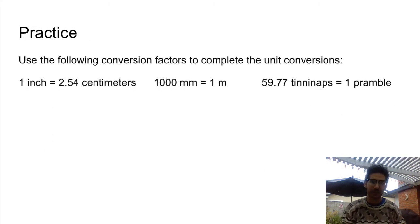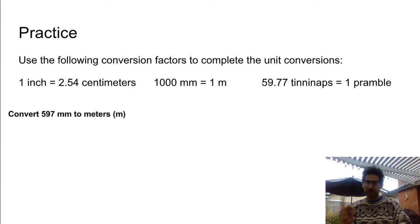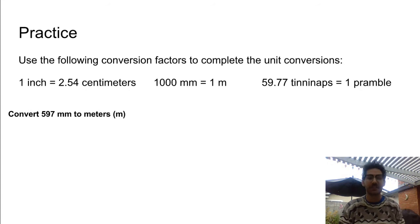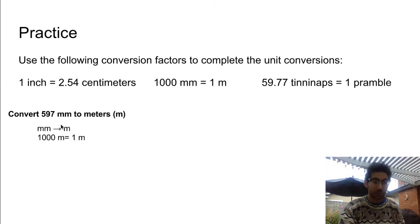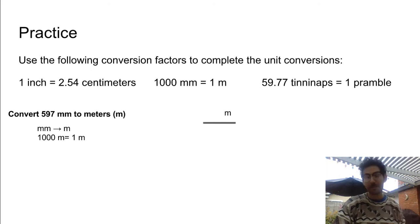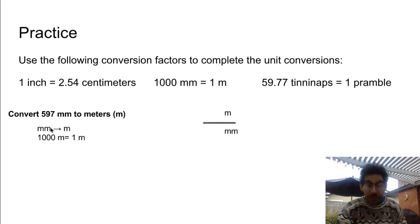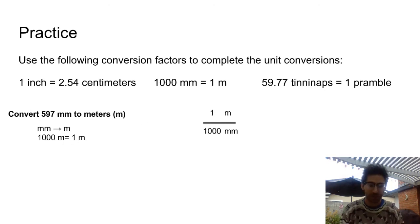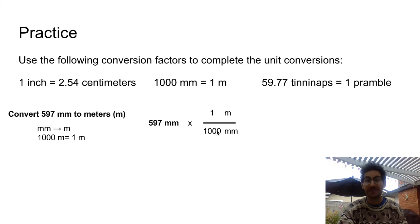Let's practice. Try using these conversion factors — pause the video and try the problem. We want to convert 597 millimeters to meters. Select the conversion factor with millimeters and meters: 1000 millimeters equals 1 meter. Meters go in the numerator, millimeters in the denominator. Multiply: 597 times 1 divided by 1000 gives 0.597 meters.